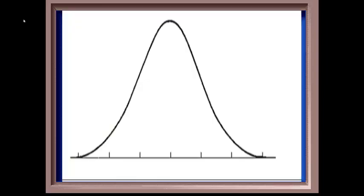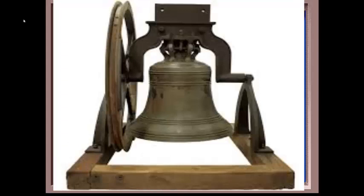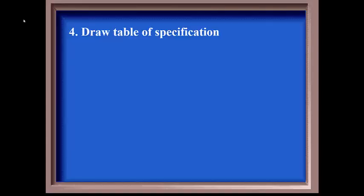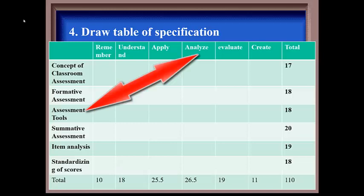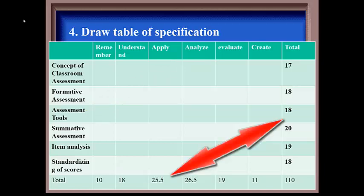In next step, we have to draw table of specification. This is table of specification. In first column we have units, and we have level of thinking in first row of the table. Here you can copy marks distributed across the units and level of thinking and paste in last column and last row respectively. Now we have total marks for units and level of thinking in the table.